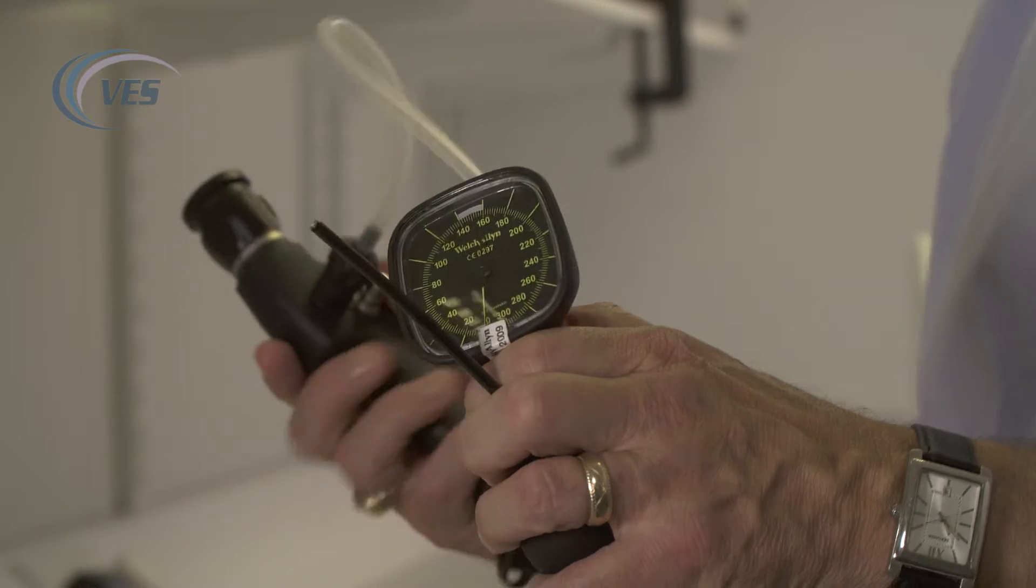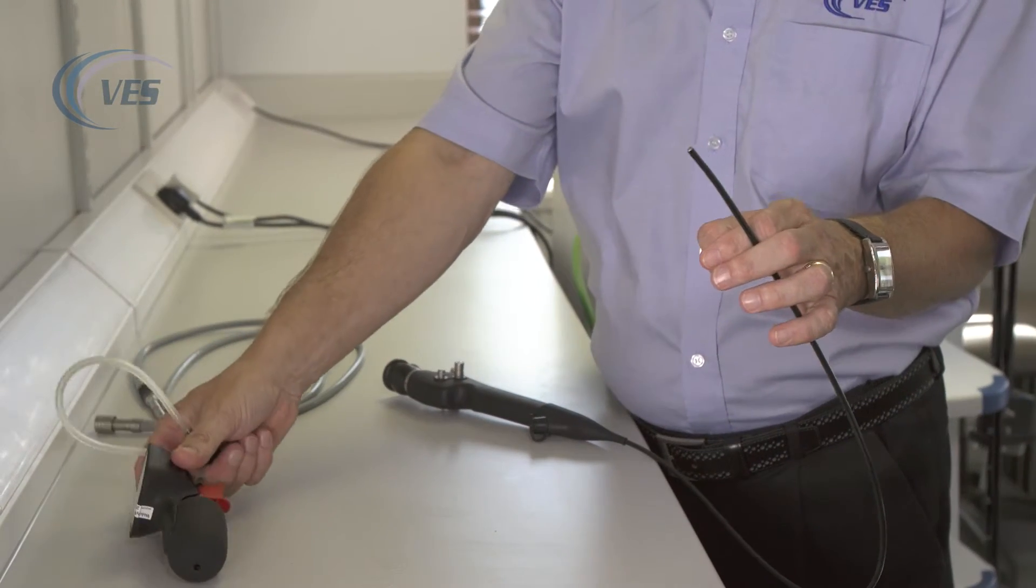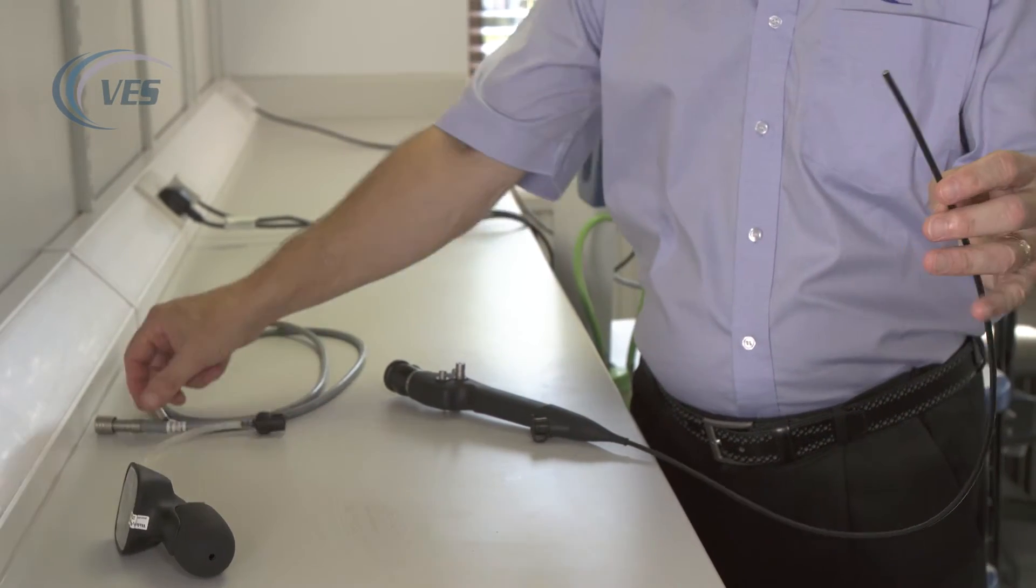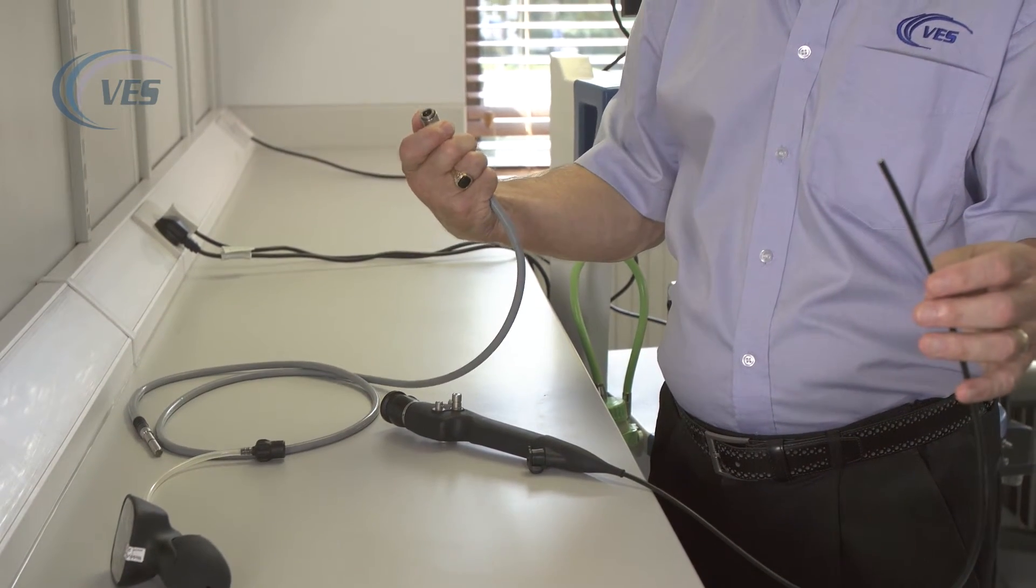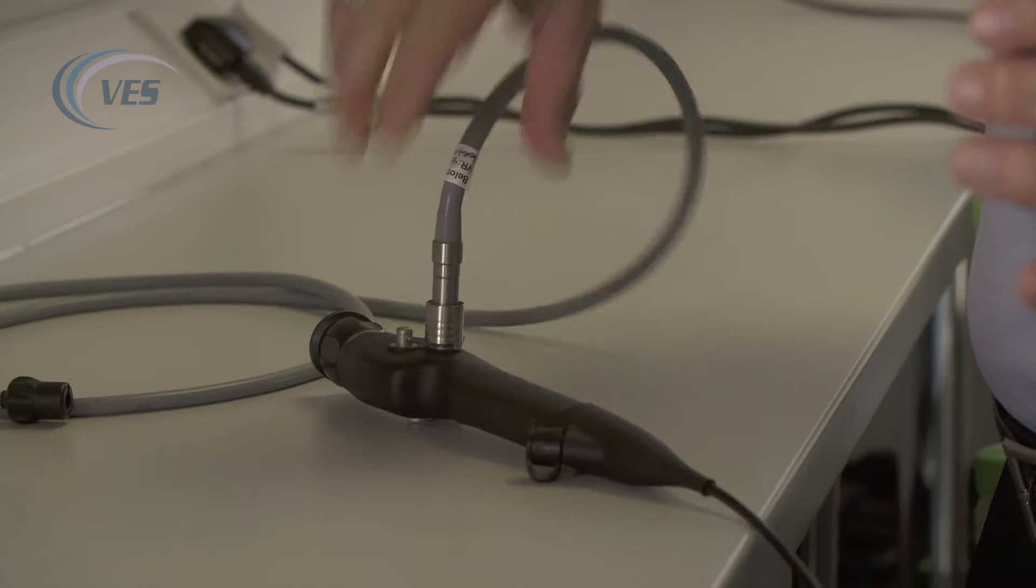What we don't want to do is put a strain on the internal workings of the scope. We then have to attach the light guide cable, which goes onto the side of the post here.